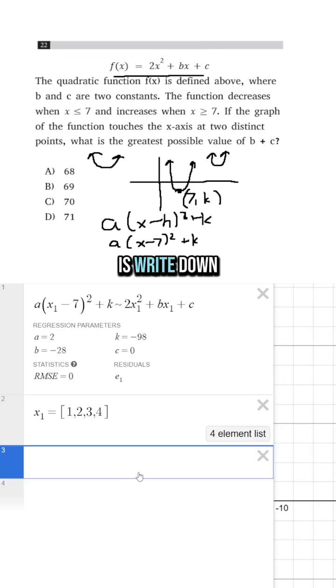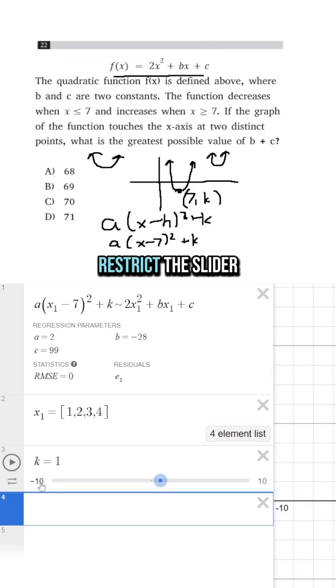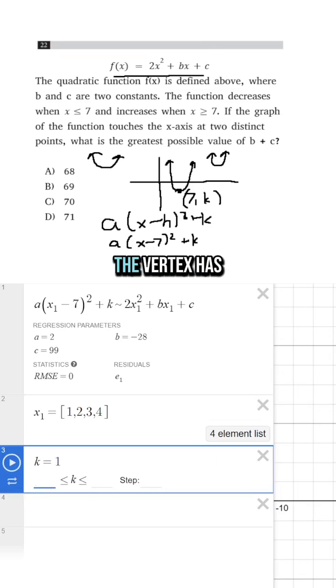What I'm going to do is write down k equals 1 just to add a slider. But I need to restrict the slider. I said that the vertex has to have a y value that is less than 0. It has to be negative. So I'm going to restrict k to be less than 0, and then let's say it goes down to negative 100.